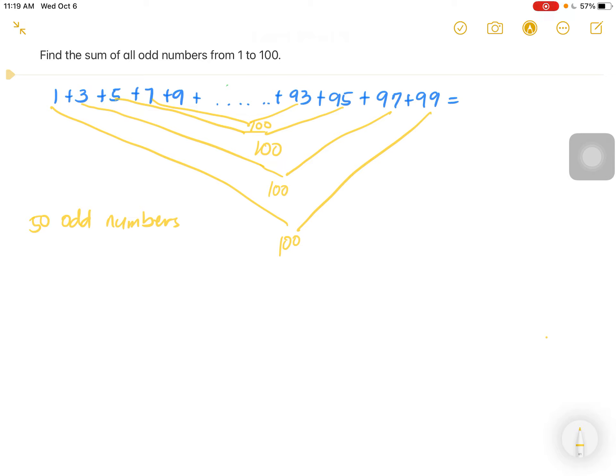How many pairs of odd numbers can we make from 50? Since we're talking about pairs, it will be 2 numbers per pair, so that's 50 divided by 2. We have 25 pairs of odd numbers. And each pair is 100, so 25 times 100 will give you 2,500.